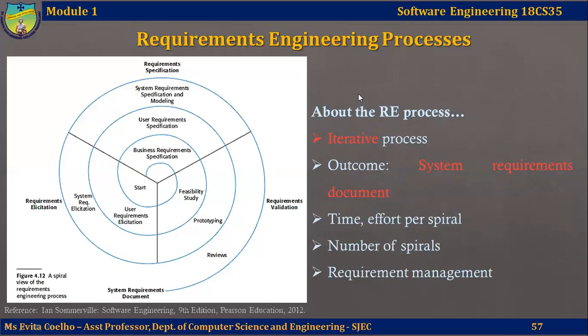In virtually all systems, requirements tend to change. The people involved develop a better understanding of what they want from the software, the organization buying the system may change, and modifications are made to the system's hardware, software, and organizational environment. This entire process of managing these changing requirements is called requirements management. We will talk about requirements management and different ways of requirements elicitation in detail in upcoming lecture videos.